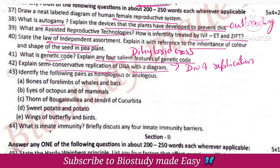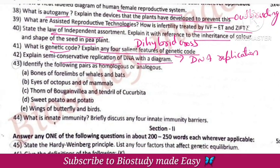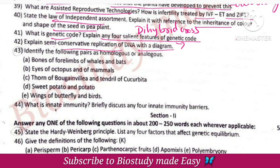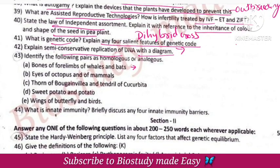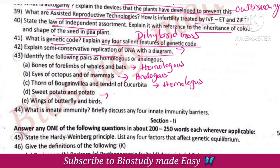Identify the following pairs of homologous and analogous organs: Bones of forelimbs of humans and whales — homologous organs, same structure and origin but different function. Eyes of octopus and mammals — analogous. Thorn of Bougainvillea and tendril — homologous. Sweet potato — analogous, because function is the same but origin is different. Wings of butterfly and birds — analogous organs.